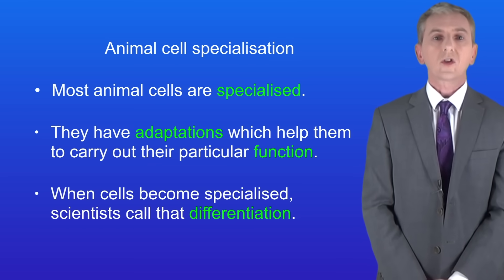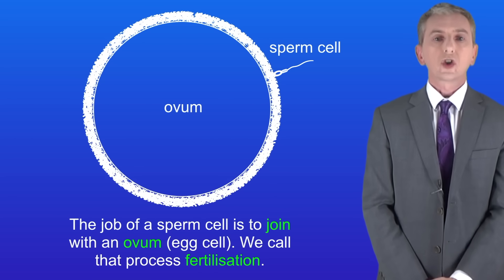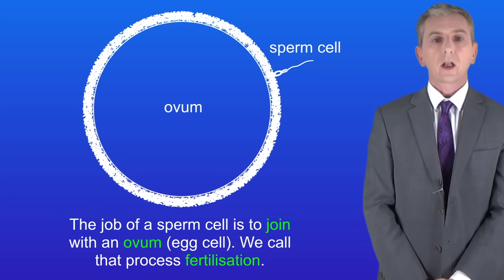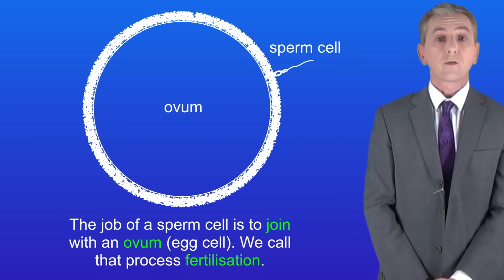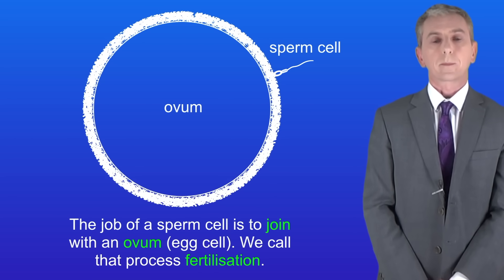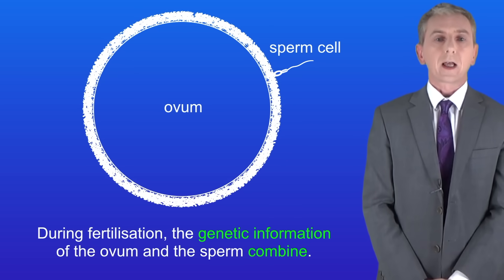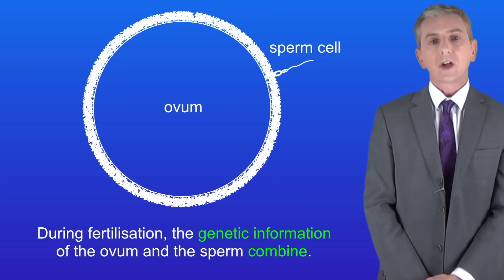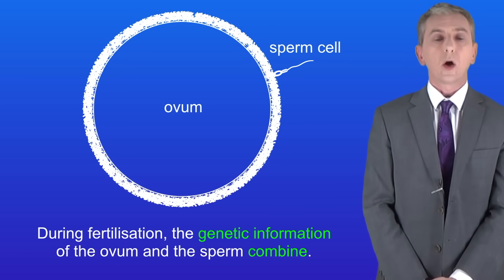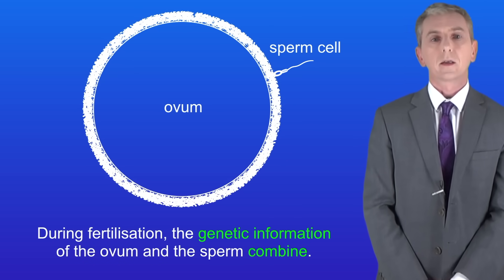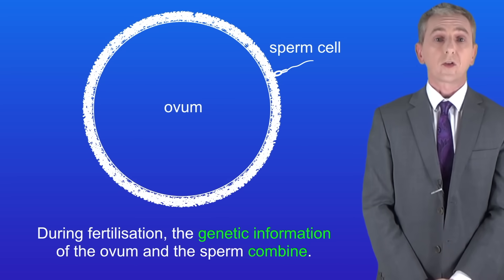We're going to start by looking at sperm cells. The job of a sperm cell is to join with an ovum — in other words an egg cell — and we call this fertilization. During fertilization, the genetic information of the ovum and the sperm combine. So let's look at how sperm cells are adapted for this process.